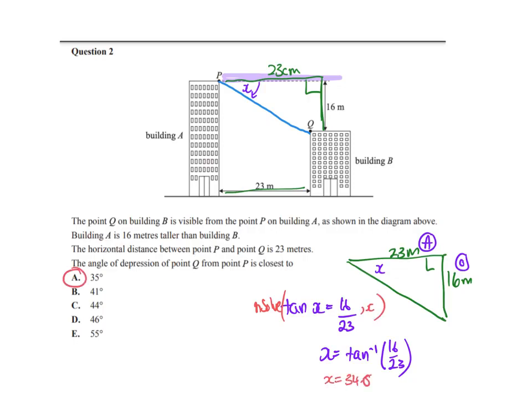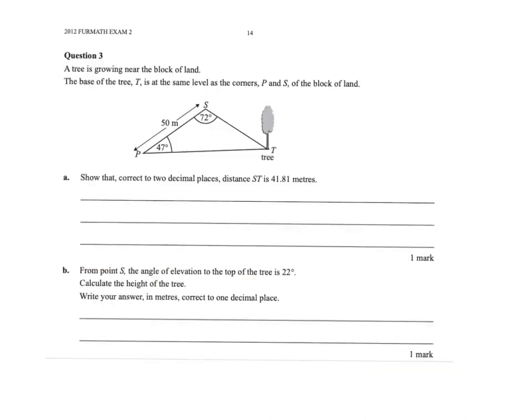We get x to be 34.8, so rounding to the nearest degree, the angle of depression is approximately 35 degrees.